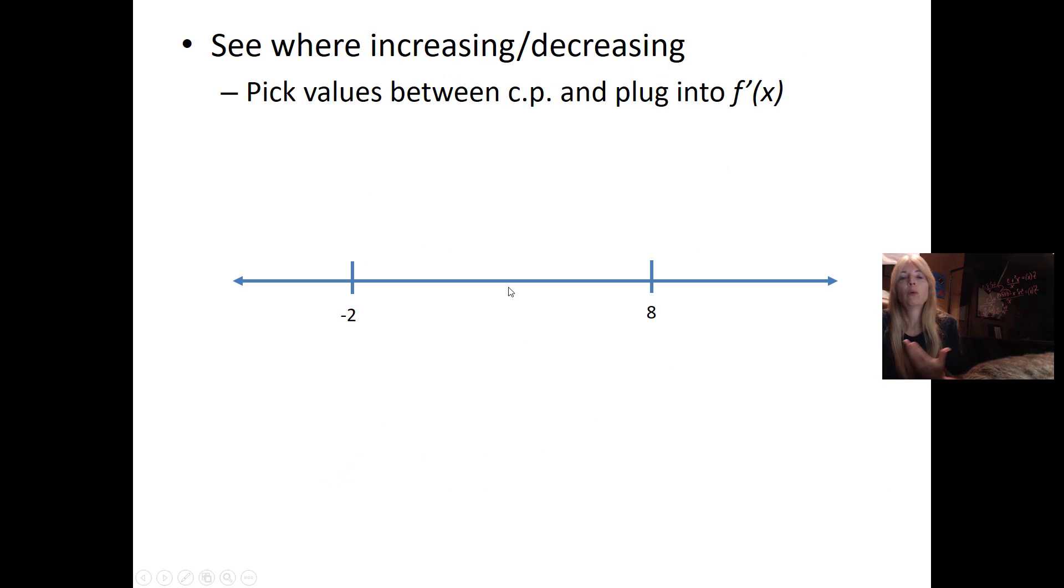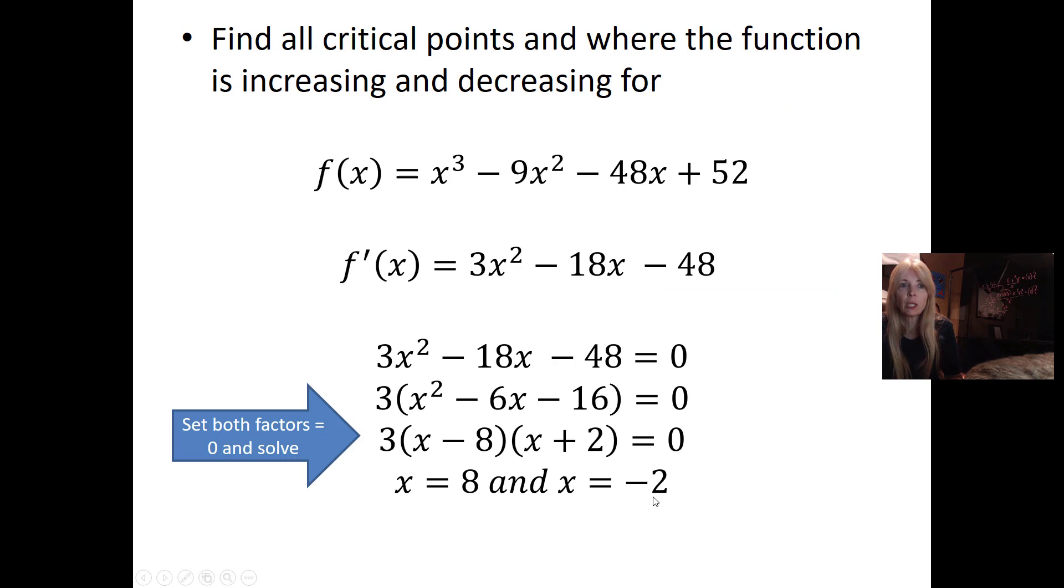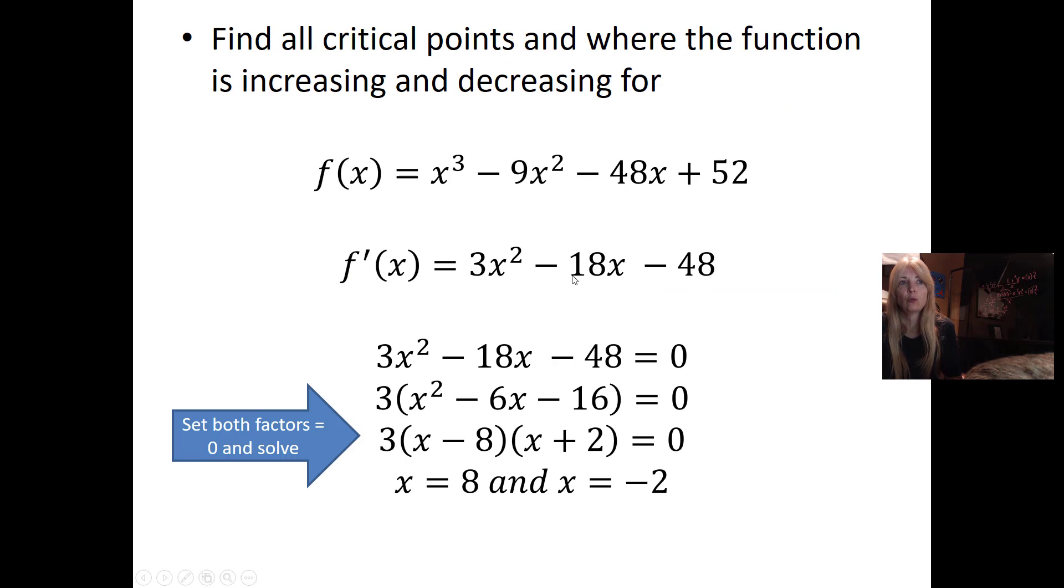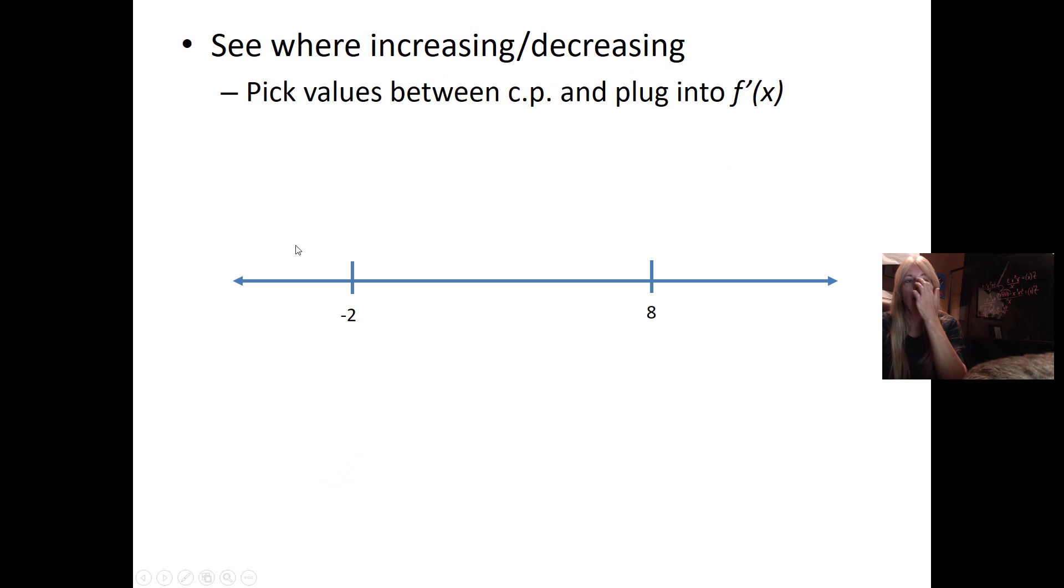What you typically do is you draw a number line and you put your critical points on it. So negative 2 and 8. Then you pick values between. Any numbers in here, you tend to pick them to be close.